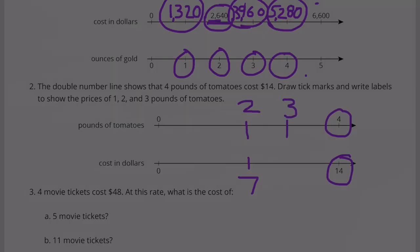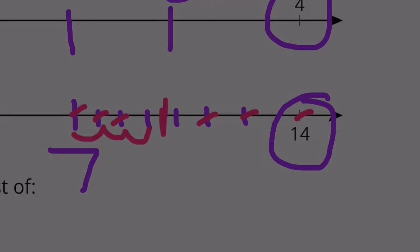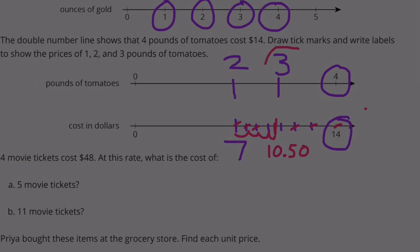For three pounds, we need the price exactly between $7 and $14. Counting from seven to fourteen: seven, eight, nine, ten, eleven, twelve, thirteen, fourteen. I can find the midpoint by eliminating from each end — it falls between these two, so figuring out the midpoint: seven, eight, nine, ten — it looks like ten and a half, or $10.50. So three pounds should be $10.50.